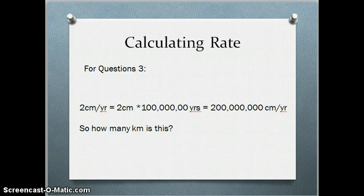Question 3 is a little bit different because it gives you centimeters, and we're looking for kilometers. So if there are 2 centimeters in one year, how many centimeters would there be in 100 million years? So you'd take the 2 centimeters and you'd multiply it by 100 million. And then you'd want to change that to kilometers. So you would take your 200 million centimeters and change it into kilometers, and that should help you out.